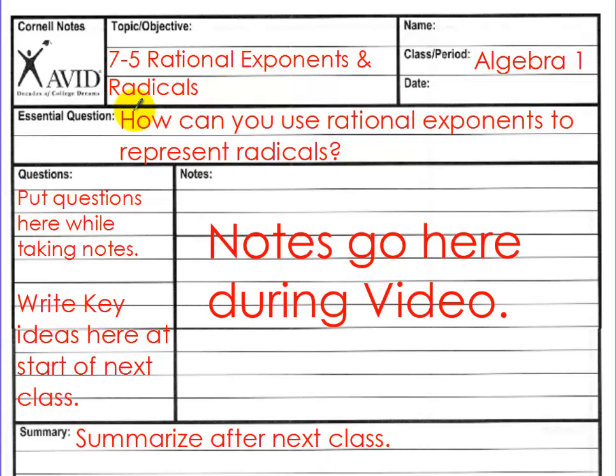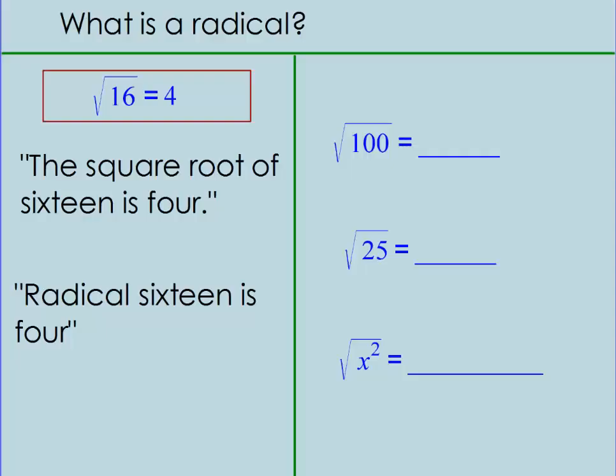Welcome Algebra 1, this is 7-5, Rational Exponents and Radicals. The essential question is, how can you use rational exponents to represent radicals? Let's begin.